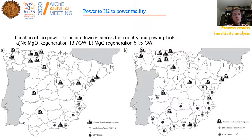In the second alternative, if we have to regenerate the magnesium oxide, far larger energy must be provided — 51.5 GW. As a result, not only more PV panels are to be installed, and not only in the Mediterranean coast, but also in the interior regions like Badajoz, Cáceres, and so forth, which are selected for installation of these panels. Also, up to 8,000 wind turbines are located across Salamanca, Zamora, Ávila, Madrid, and so on.